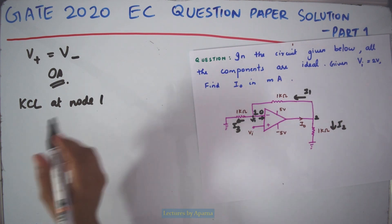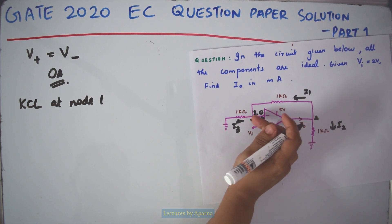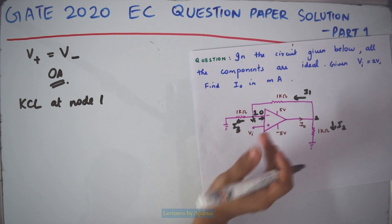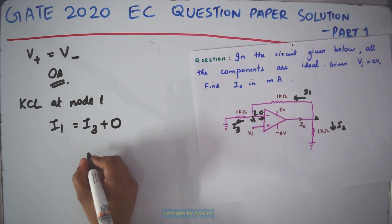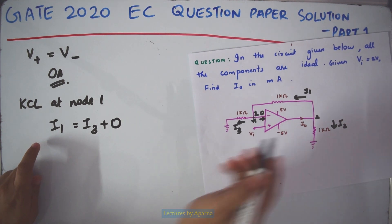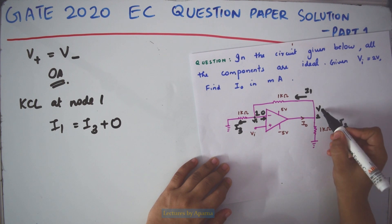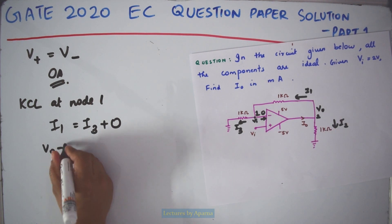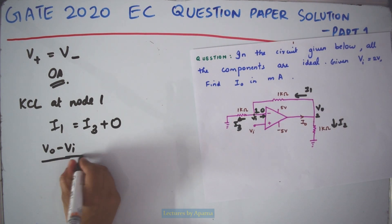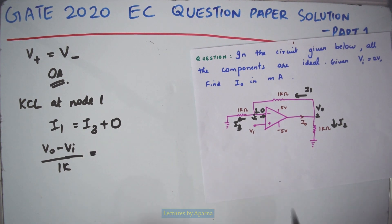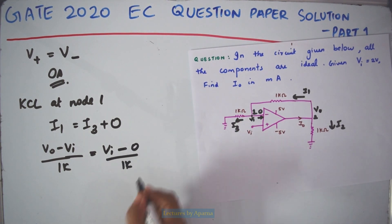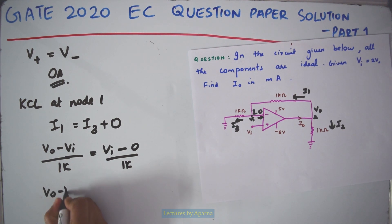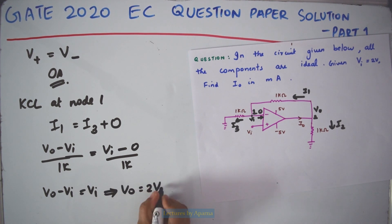Applying KCL at node 1, the current flowing into the node equals the current flowing out. That is, I1 equals I3 plus 0 amperes. Let the output voltage be V0. So I1 is V0 minus VI divided by 1 kilo-ohm, which equals I3, which is VI minus 0 divided by 1K. This gives V0 minus VI equals VI, so V0 equals 2VI.